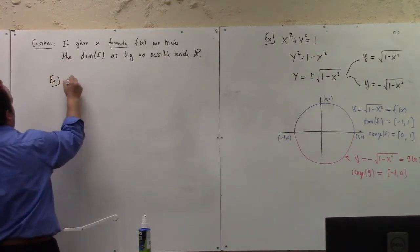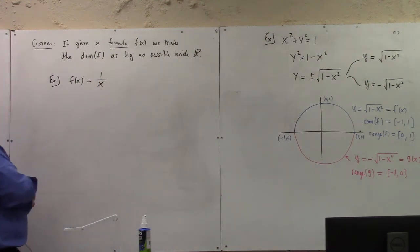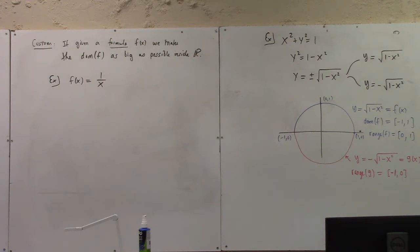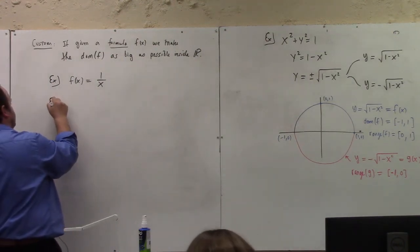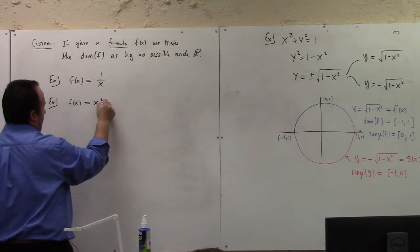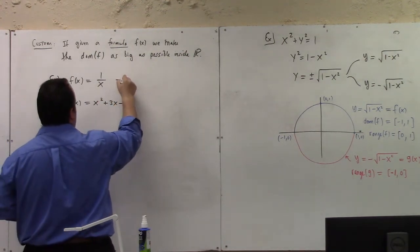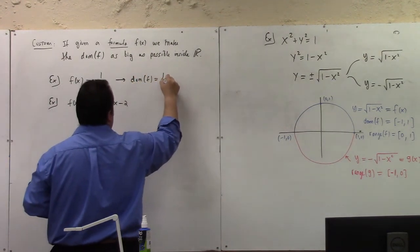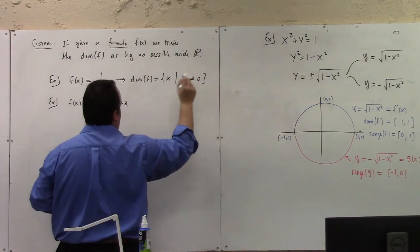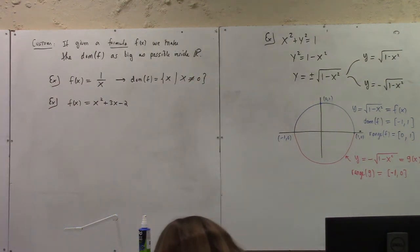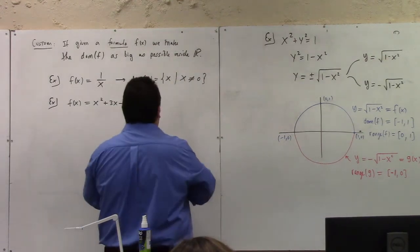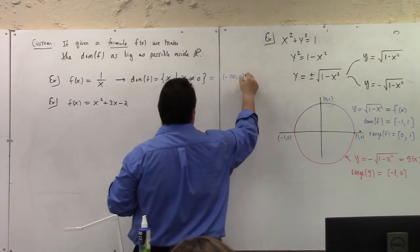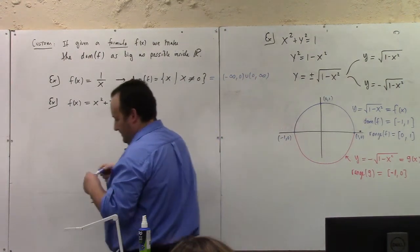So, example, if I tell you f of x is equal to 1 over x, what's the domain? So, the domain of this would be x such that x is not equal to 0. Right? We just have to avoid division by 0, otherwise the formula makes sense. Could we write that in interval notation? I think we could. It would be minus infinity to 0, union with 0 to infinity. In interval notation.